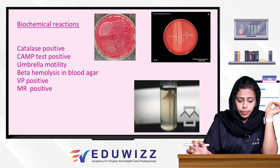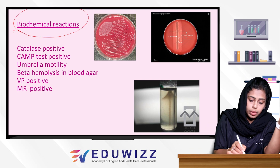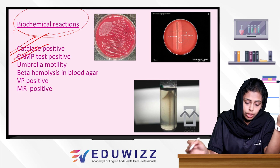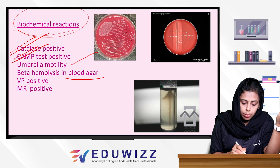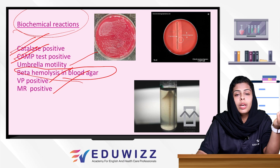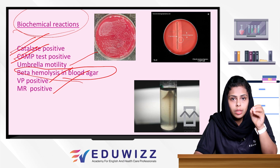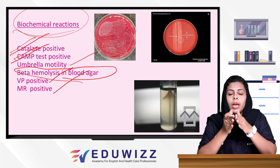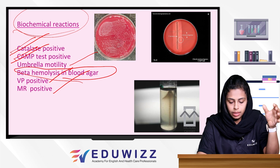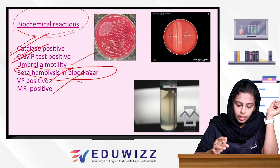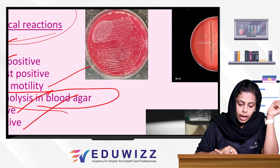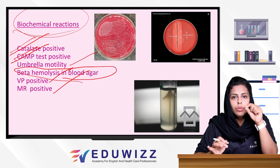Now let's look at the biochemical reactions of Listeria. It is catalase-positive — note this point. It is also CAMP-test-positive and gives umbrella motility. It shows beta hemolysis on blood agar. It is VP-positive and MR-positive. Be careful not to confuse the positive and negative results for different organisms.